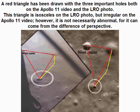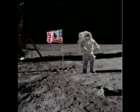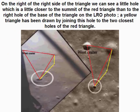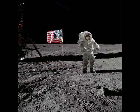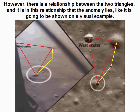This triangle is isosceles on the LRO photo but irregular on the Apollo 11 video. However, this is not necessarily abnormal, as it can come from the difference of perspective. On the right side of the triangle we can see a little hole which is slightly closer to the summit of the red triangle than to the right hole of the base. On the Apollo 11 video, this little hole is much closer to the right hole of the base — but again, this is not necessarily abnormal due to perspective. However, there is a relationship between the two triangles, and it is in this relationship that the anomaly lies, as will be shown on a visual example.